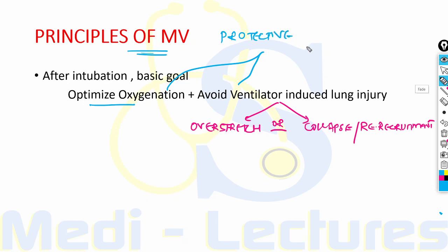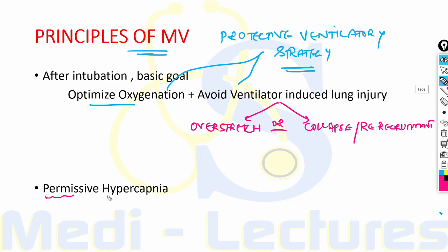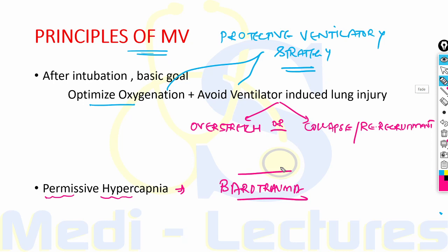The protective ventilatory strategy uses permissive hypercapnia. Normalization of pH through CO2 elimination is desirable, but achieving this requires very large pressures and high volumes which can cause barotrauma. Therefore, a permissive level of CO2 is kept inside the lungs. This is well tolerated if we avoid excessive acidosis through pH buffering using bicarbonate or other buffers. Excessive CO2 correction leading to barotrauma should be avoided — this is the concept of permissive hypercapnia.